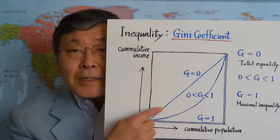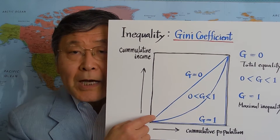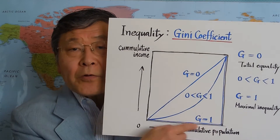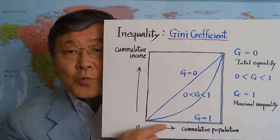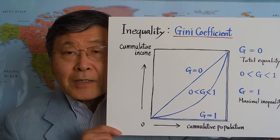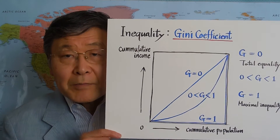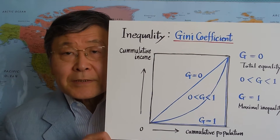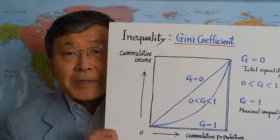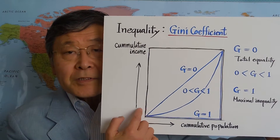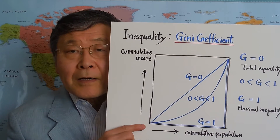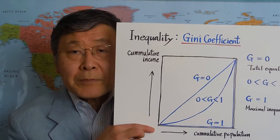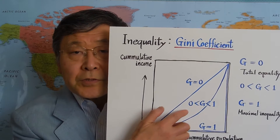In the case of total equality, the Gini coefficient equals zero. In the case of maximum inequality, the Gini coefficient equals one. So in reality, the Gini coefficient is somewhere in between, between zero and one. As you can guess, developing economies tend to have a relatively high Gini coefficient, closer to one, whereas developed economies tend to have a more equal income distribution, so the Gini coefficient is closer to zero.